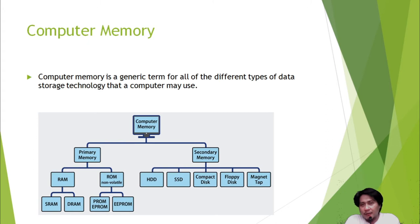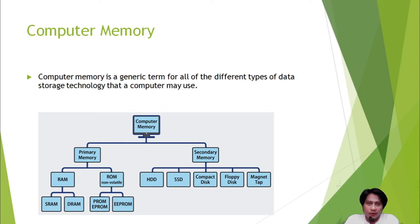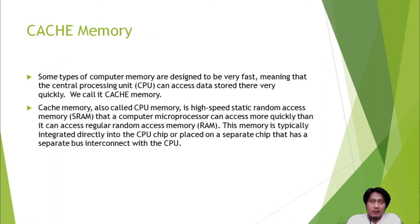In primary memory — both ROM and RAM — you can add, edit, and delete data, but only temporarily. When the computer turns off, all data may be lost and you will not be able to retrieve it when you turn the computer back on. That is the key difference between primary and secondary memory.